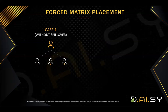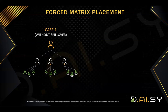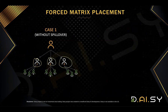Before we talk about the metrics income, let's discuss what a forced matrix is. In a 3x10 matrix, you will have three members in the first generation, nine members in the second generation, and 27 in the third generation — so it's always multiplied by three. Why is it a forced matrix? If you have referred three people, they will be placed on your first generation. Your fourth referral will be forced to the second generation, and your fifth referral will also be forced to the second generation. Only 12 members can be placed in the first two generations.